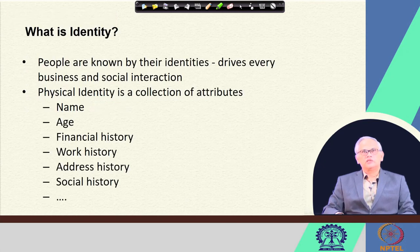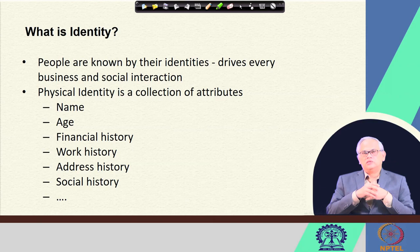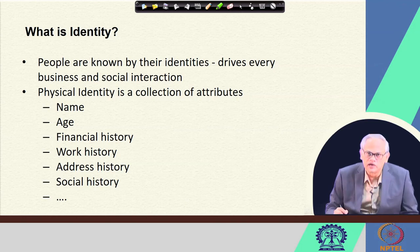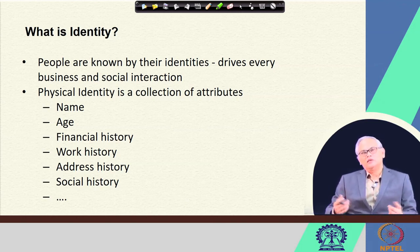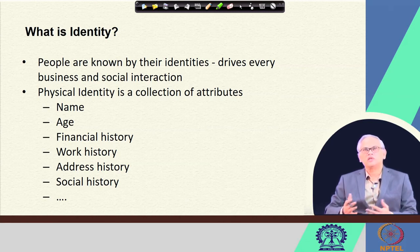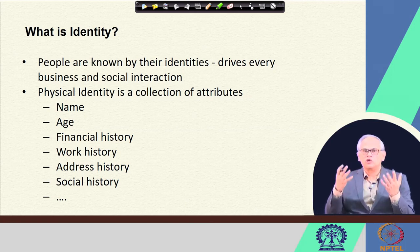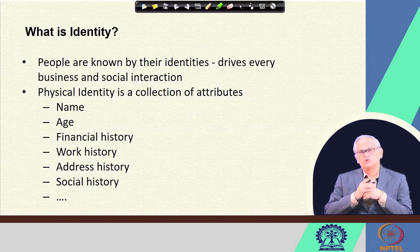Let us move on to the basic definition of identity. In the physical world, people are known by their identities. Typically it could be our name — name is a very common identity. But because multiple persons might have the same name, say in a university there could be multiple students with the same name, we use some other identifying attribute like a roll number. In an organization, we identify employees by their employee number. And then we also commonly know about identity cards, where our identity is written.